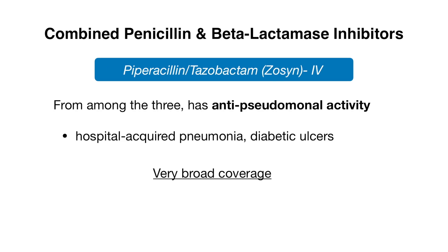Our third medication in this group is piperacillin-tazobactam, or Zosyn, which comes in IV form. Among the three combinations, this is the only one with anti-pseudomonal activity, so it's often used in hospital-acquired pneumonia and diabetic ulcers where the likelihood of pseudomonas is much greater. Zosyn has very broad antibiotic coverage including gram-positives, gram-negatives, and anaerobes — just as with Unasyn — except it has even better gram-negative coverage than Unasyn.